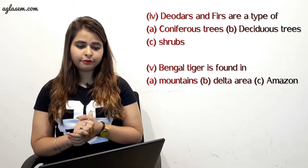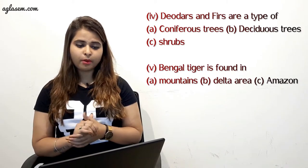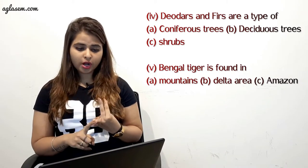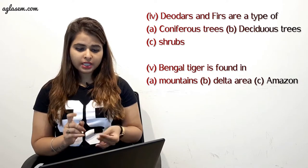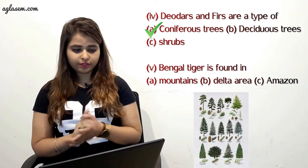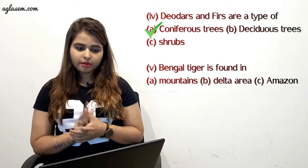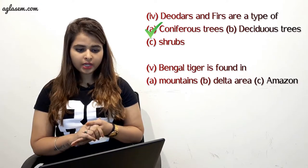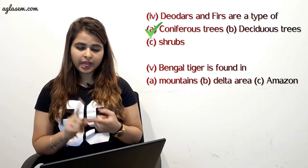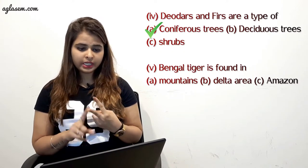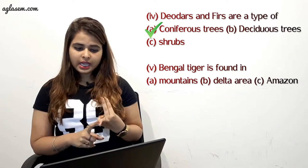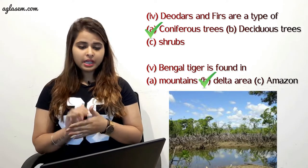Fourth part: deodar and firs are a type of coniferous tree, deciduous tree, or shrub? The answer is coniferous tree. Last part: Bengal tiger is found in A) mountain, B) delta, or C) Amazon? The answer is delta areas.